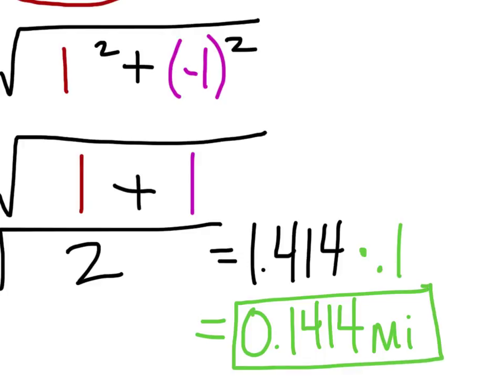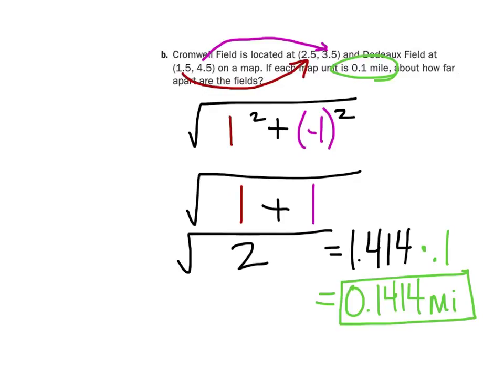This 0.1 is what we call a scale factor. It's on a map, but in actuality the two locations would be 0.1414 miles apart, while on the map they are just 1.41 grid units away.